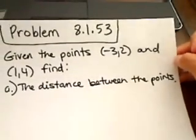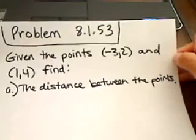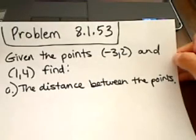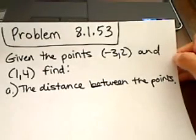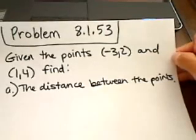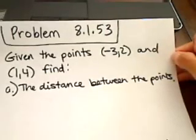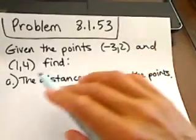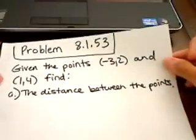Okay, so this is problem 8.1.53, and this is basically a paraphrase of this problem. They actually give you a picture of the graph with these two points and then a line segment connecting them, and then they ask you to find the distance between the points and then also the midpoint. So if we're given this point and that point, we want to do those two things.